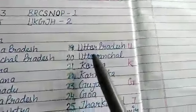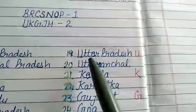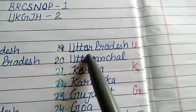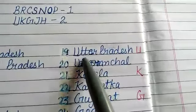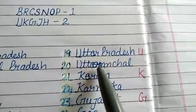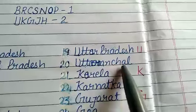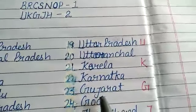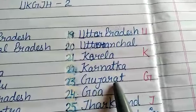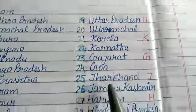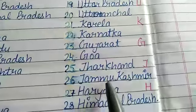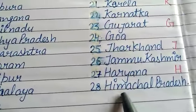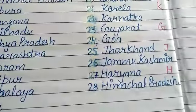Uske baad humara U, K, G, J, H — jo hamare 2-2 states hain: U se Uttar Pradesh aur Uttarakhand; K se Kerala aur Karnataka; G se Gujarat aur Goa; J se Jharkhand aur Jammu Kashmir; H se Haryana aur Himachal Pradesh.